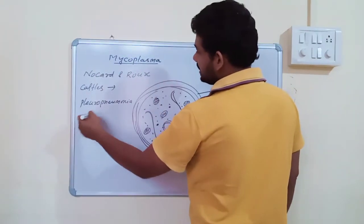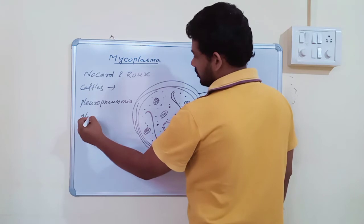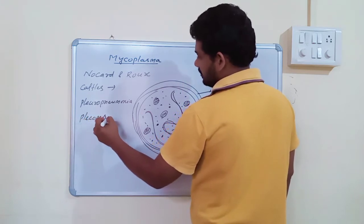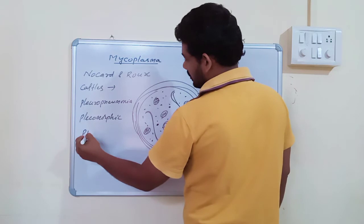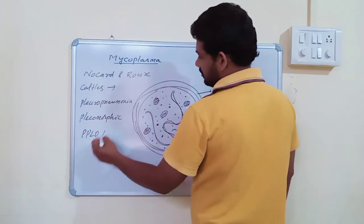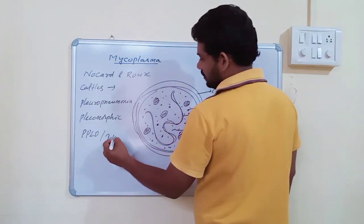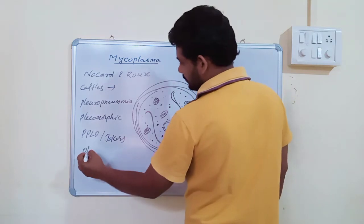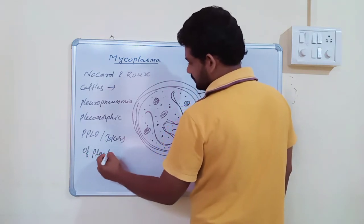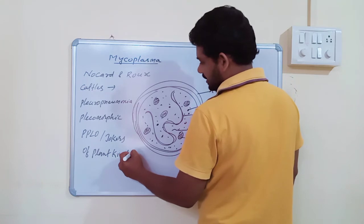These mycoplasmas are highly pleomorphic. Hence they are called PPLO or they are also called jokers of plant kingdom.